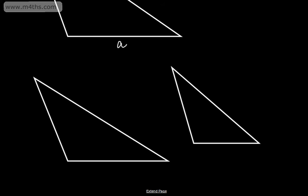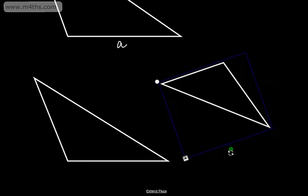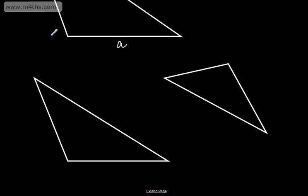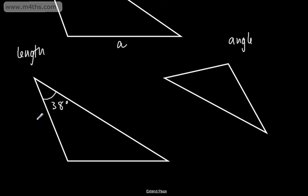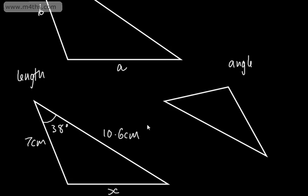We're going to start off by finding a missing length, and then we will look at a missing angle. I'll get two different triangles up here, and as before, we can see that these can have any configuration. For the length example, I'm going to put that this angle right here is going to be 38 degrees. This side length is going to be 7 centimeters, and this side length is going to be 10.6 centimeters. We're looking at finding the length X, which is opposite the angle enclosed by these two sides.